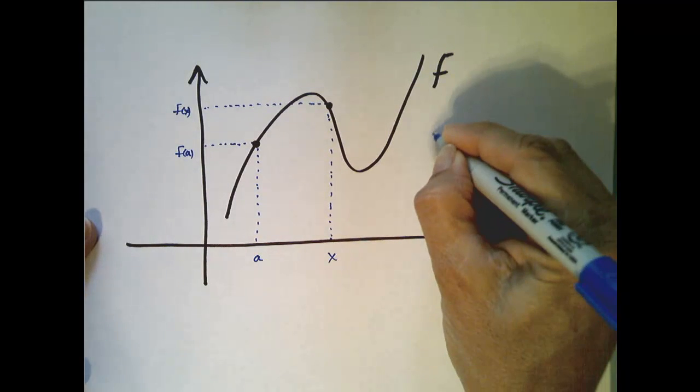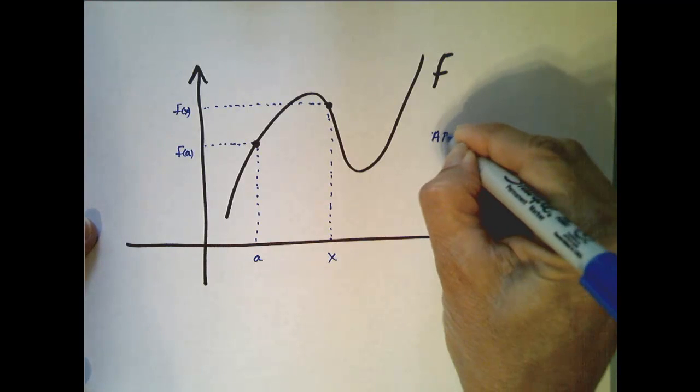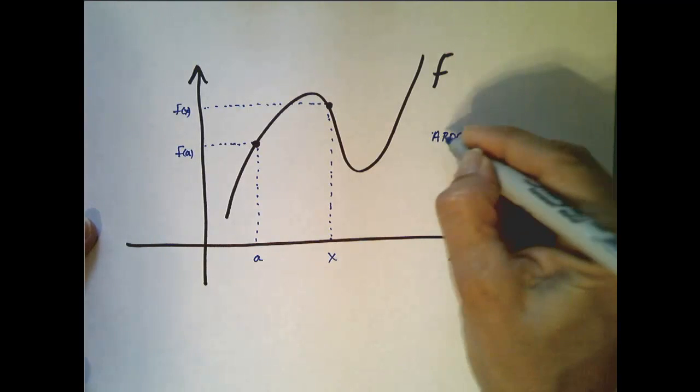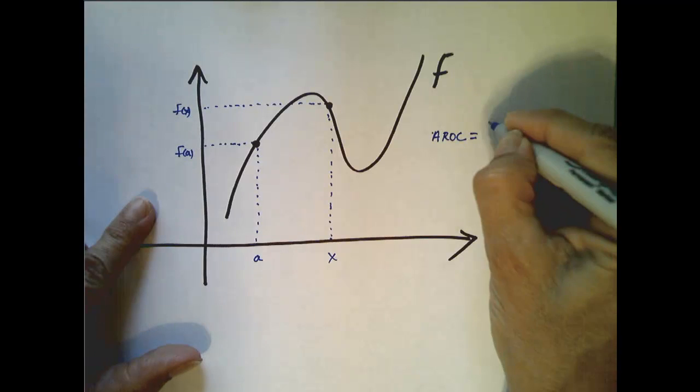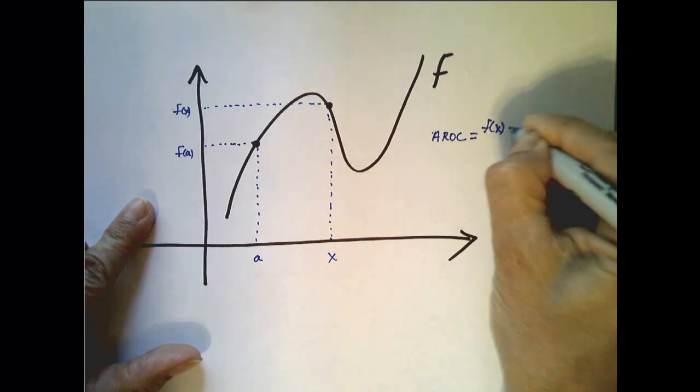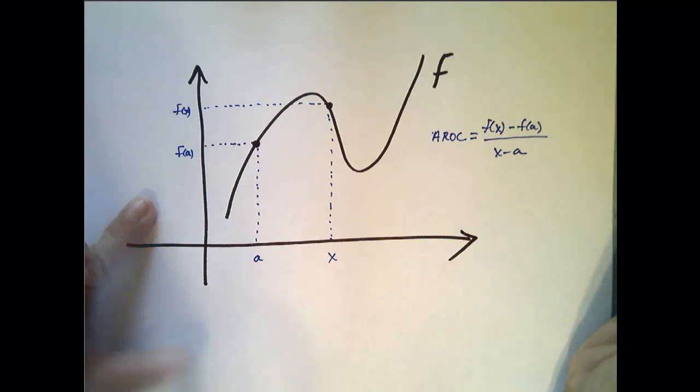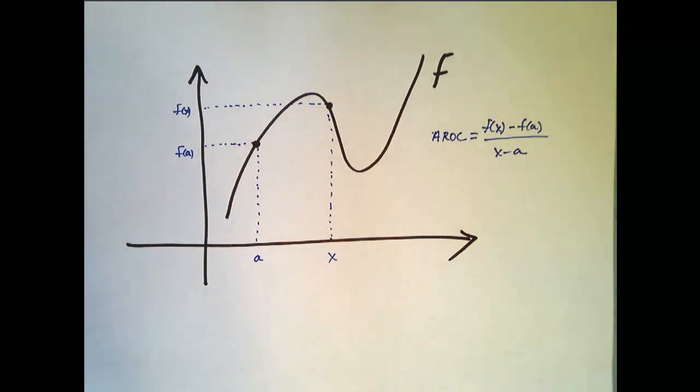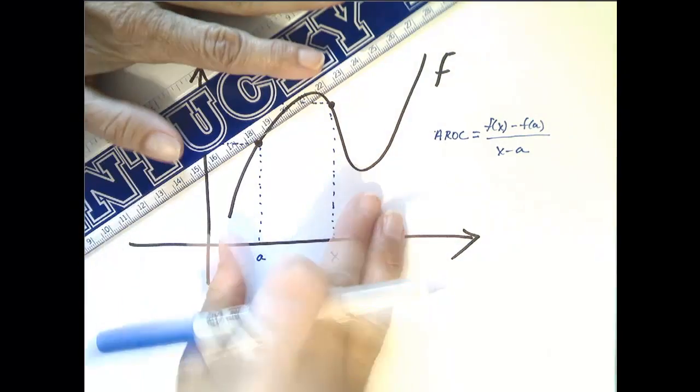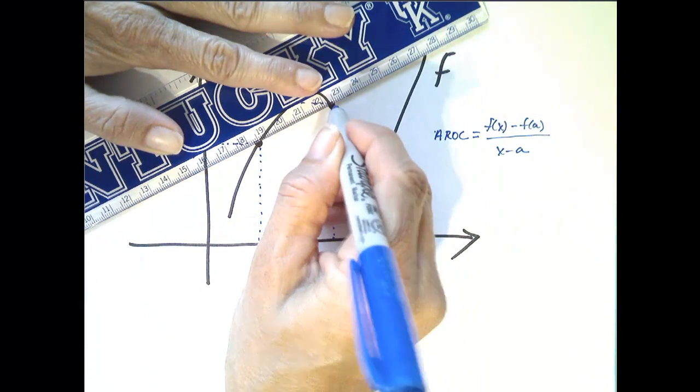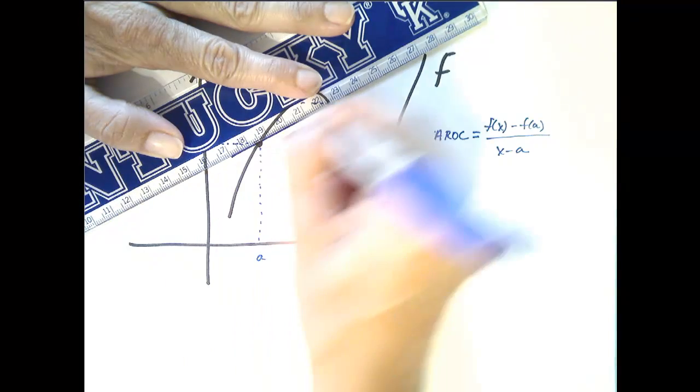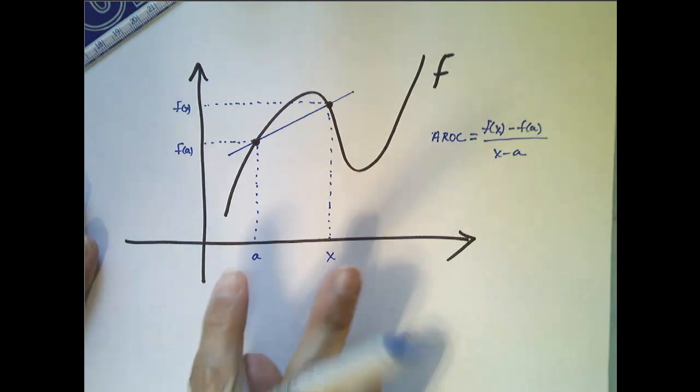input values. So the average rate of change, which I'll abbreviate as AROC, is equal to the change in the y values divided by the change in the x values. And graphically, just as before, this represents the slope of the secant line connecting these two points.